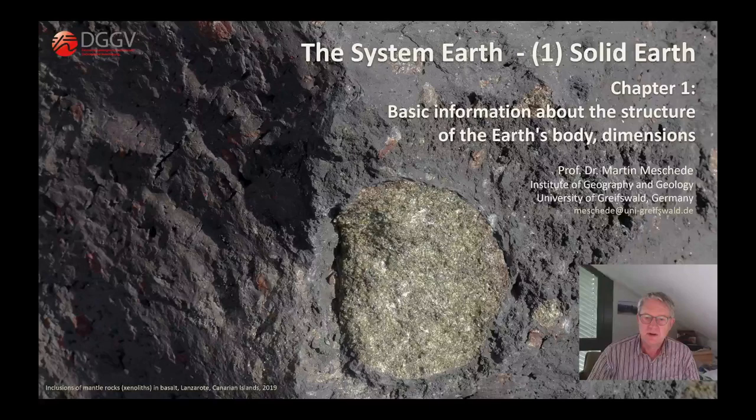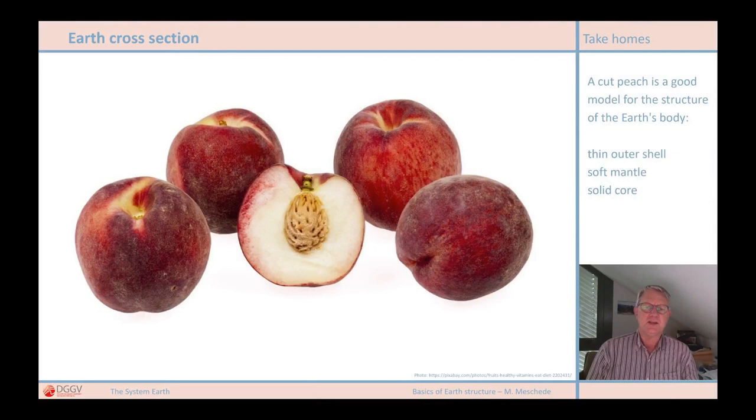Everyone has probably eaten a peach and probably cut it open. The nice thing is that with a peach, we have a very suitable model for the structure of the Earth's body. It has a firm core, a more or less soft fruit mass, which we can also call a mantle, and a thin outer shell.